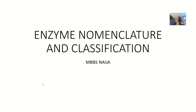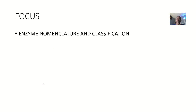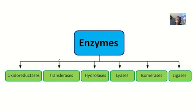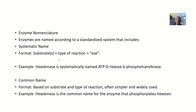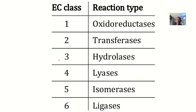Alright, so for the concept of enzyme nomenclature and classification, it's very, very simple. It's one of the simplest questions I've ever come across in biochemistry. So let me show you guys how I used to handle this question. There's a mnemonic I used to remember these enzymes. The mnemonic is what?